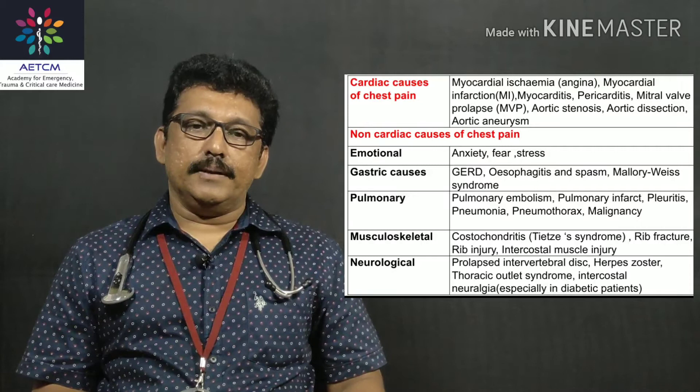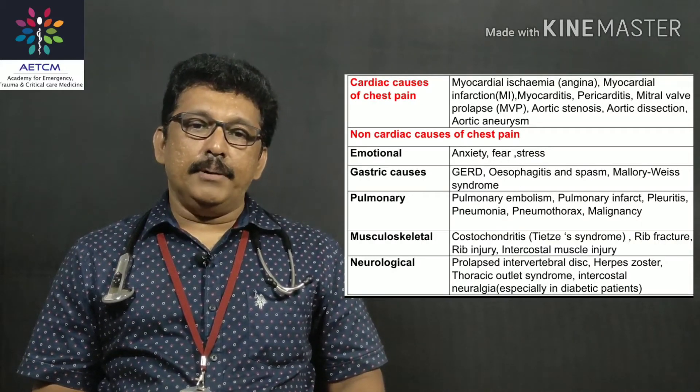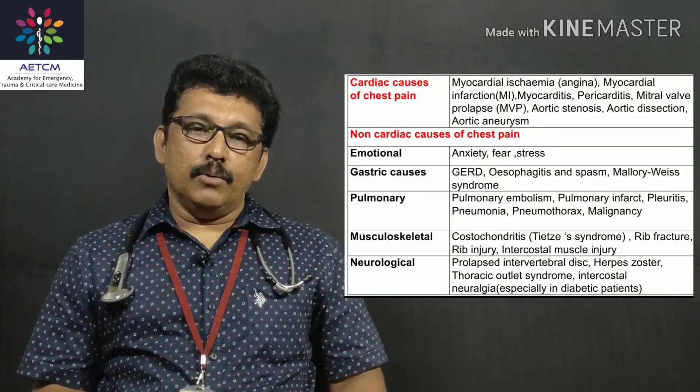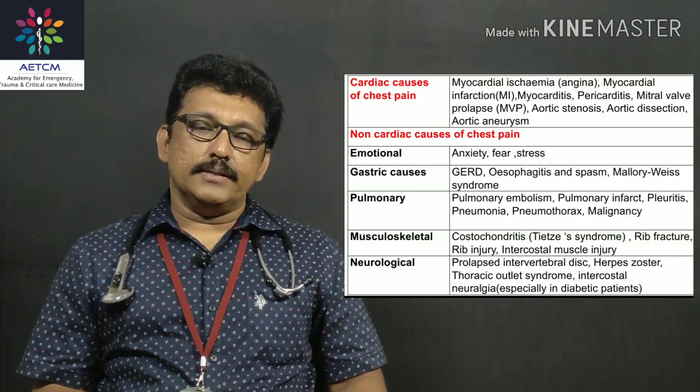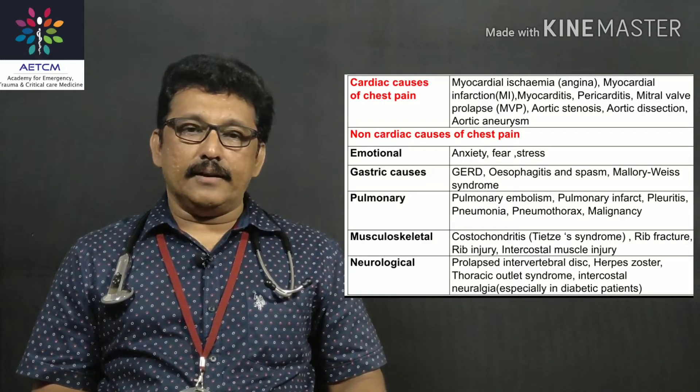Remember one skin condition that presents with acute chest pain: herpes lesions in diabetic patients. Most of the time you can see herpes lesions on the anterior or lateral chest, which can produce severe acute chest pain.